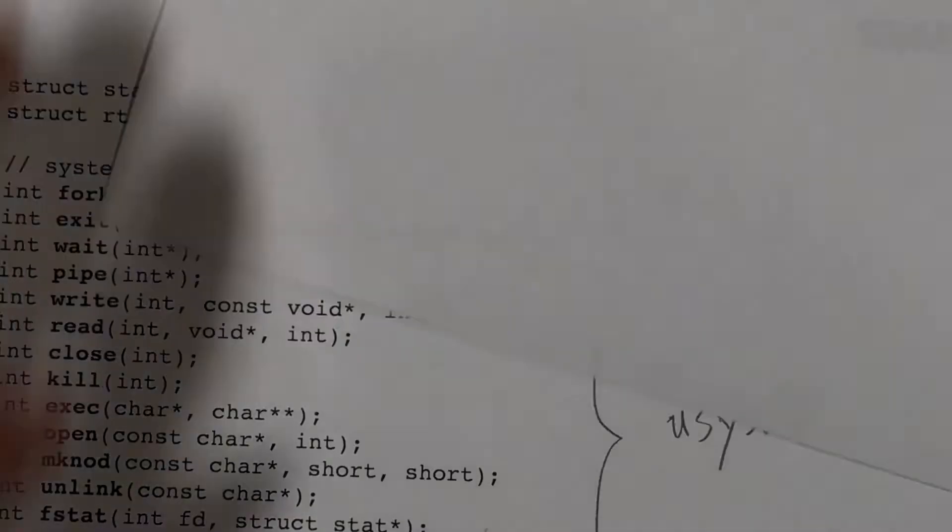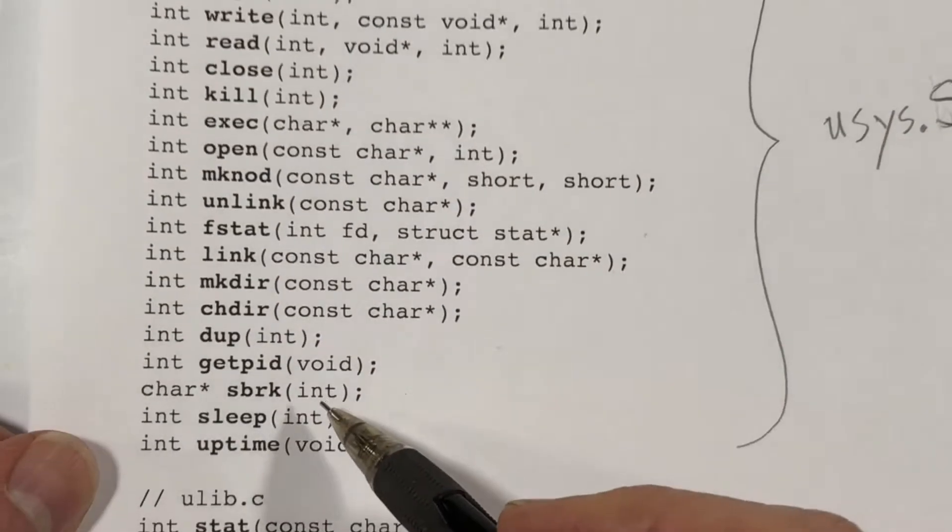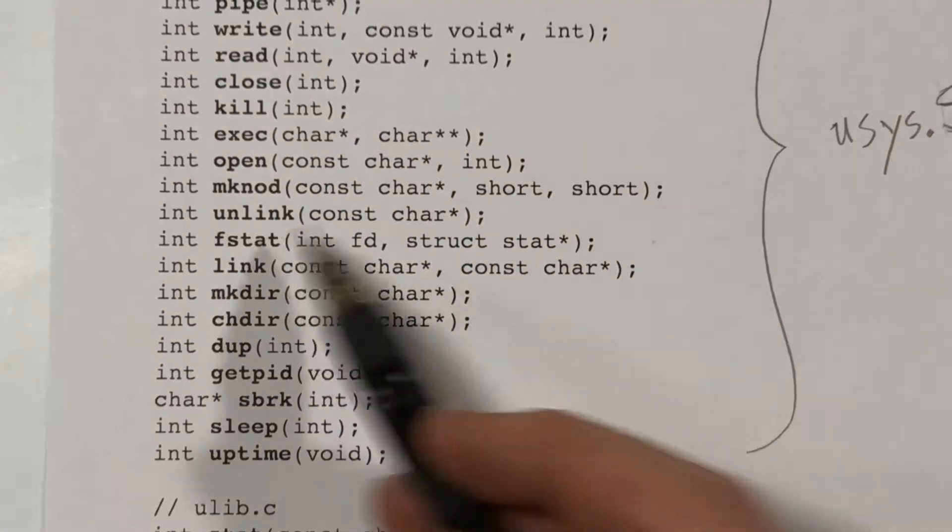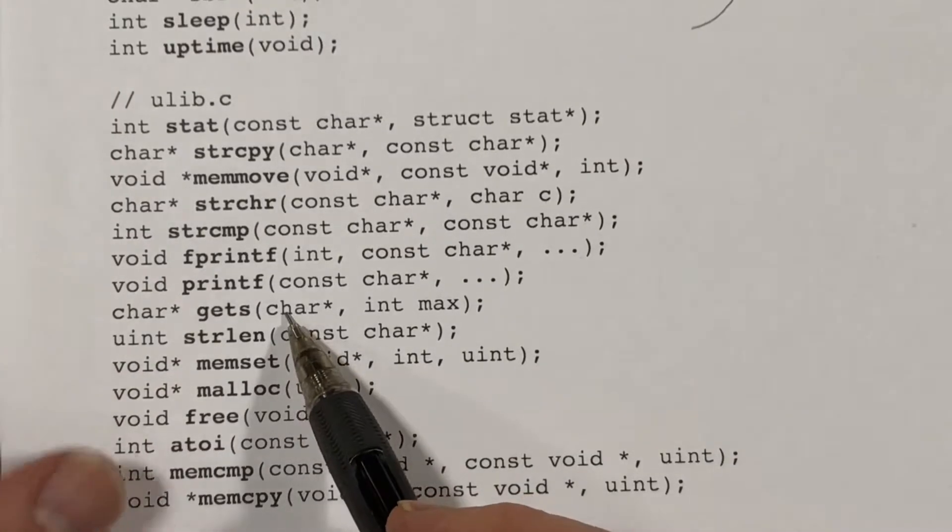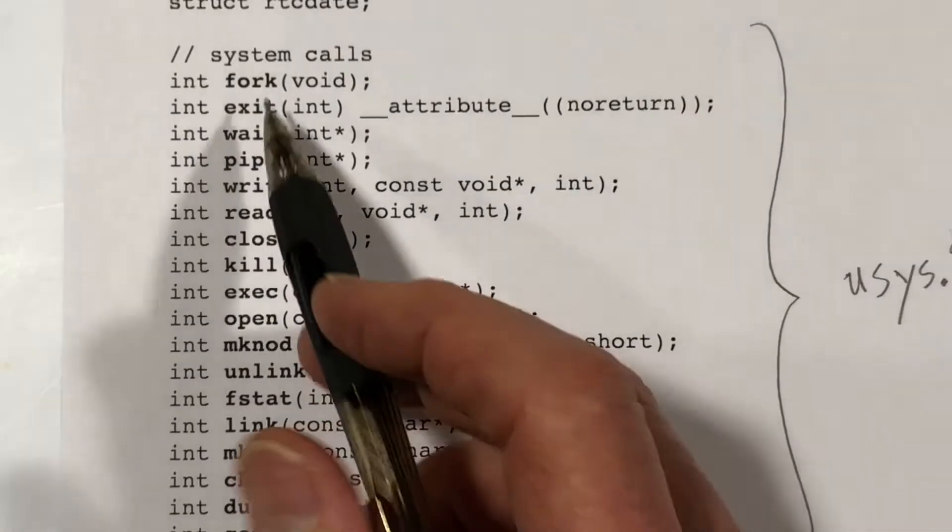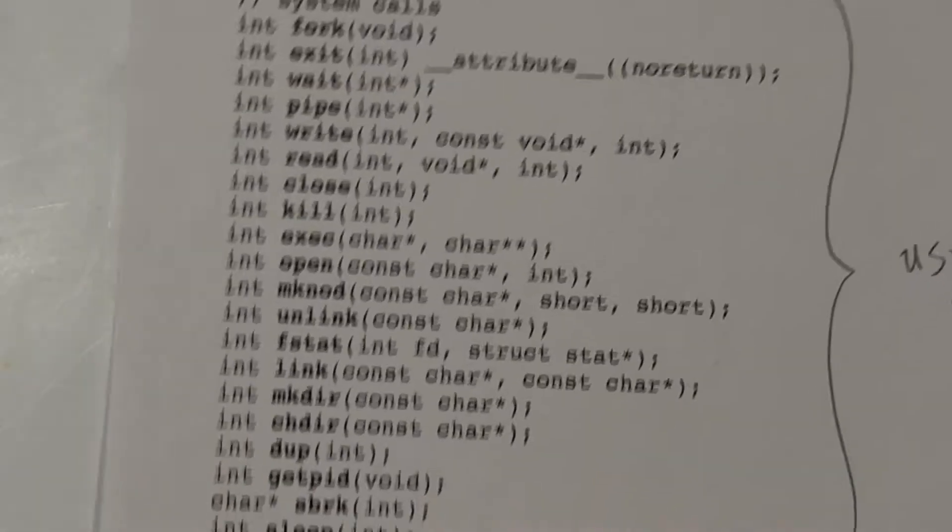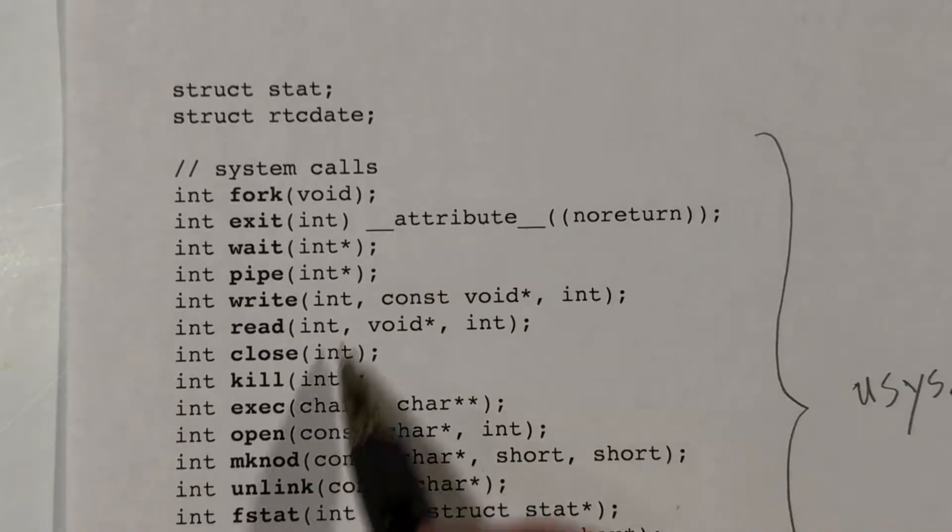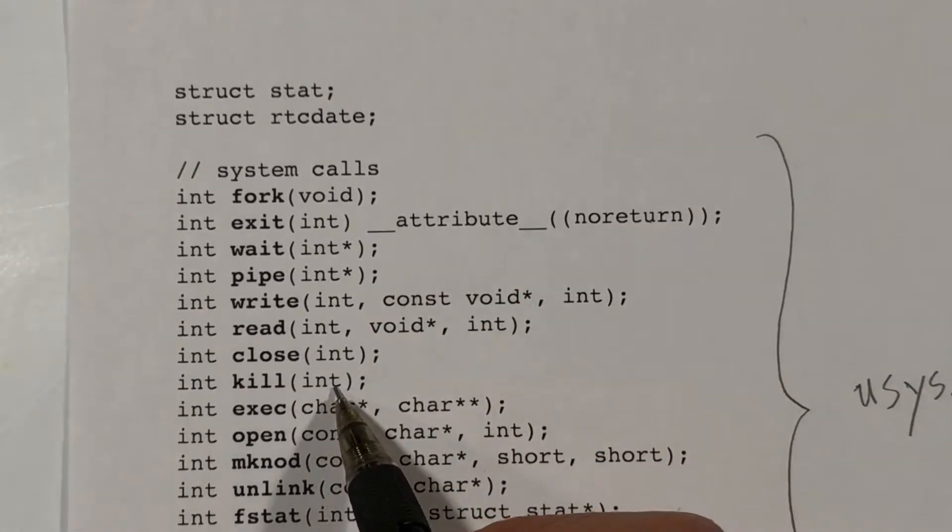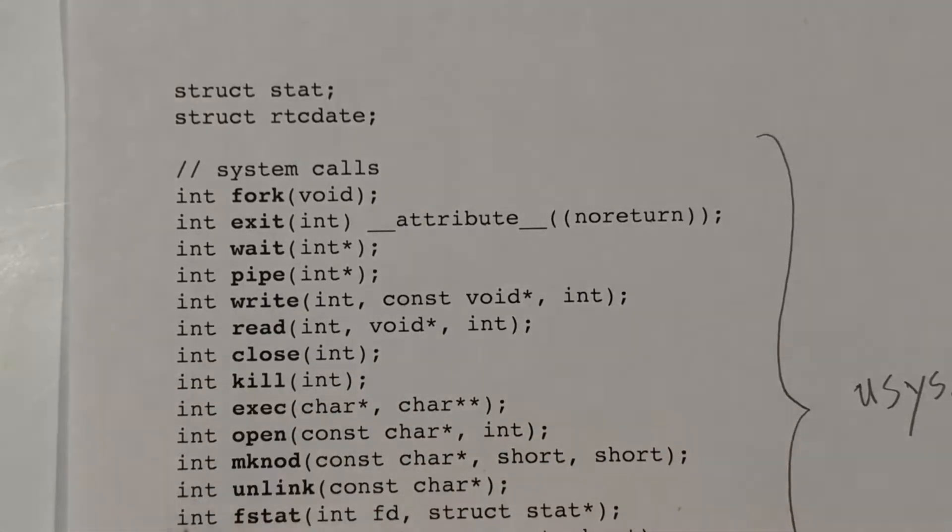So here's the code for user.h. It's a pretty short file. It contains function prototypes for the various system calls, and it contains function prototypes for the library functions. You can see each one of the 21 system calls that xv6 supports is listed here. So for example, we see exit, and we see kill. Each of these takes a single parameter, and we also see that the system calls return values.